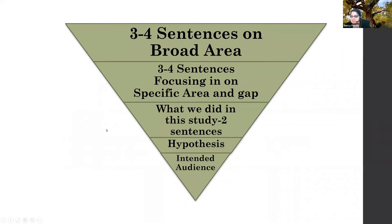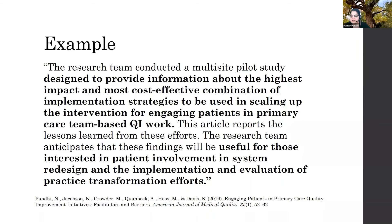The introduction follows an inverted pyramid structure. Your first paragraph is about the broad area, then you get more focused on what you're actually doing and the gap — by the time readers finish the focused part, they should be able to guess what your paper is about. Then you confirm it with what you did in this study, usually a couple of sentences, and if it's a research journal you might include a hypothesis. I also like to explicitly call out the intended audience to help the reader understand who you're trying to talk to.